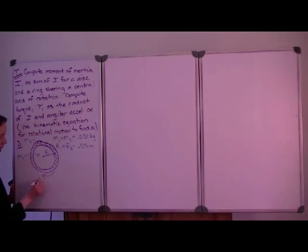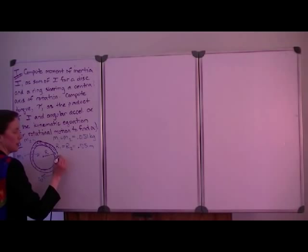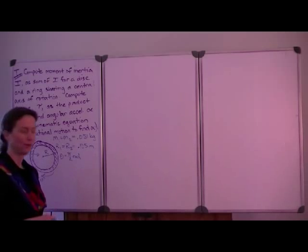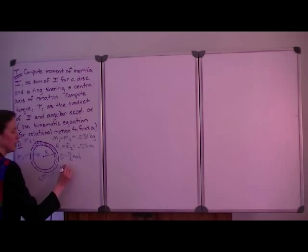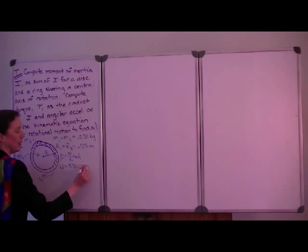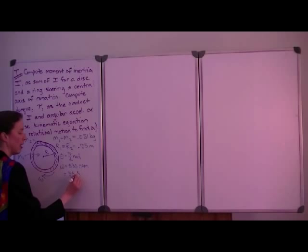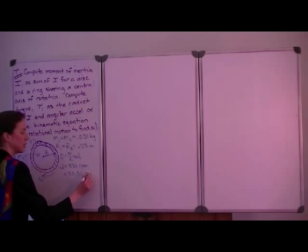We're told that the final angular velocity omega is achieved with an angular displacement of pi over 2 radians, or one quarter turn. The final angular velocity is 530 revolutions per minute, or RPM. This is not an MKS unit, so if we convert it to radians per second, we get 55.50 radians per second.